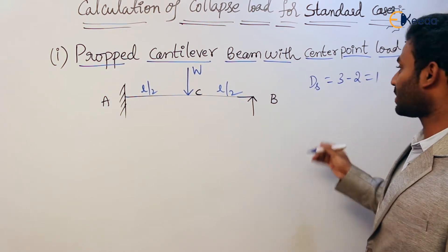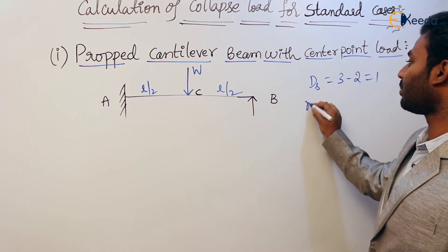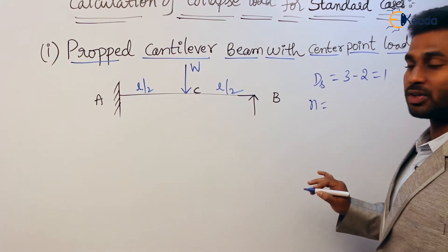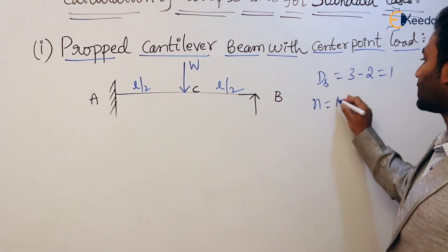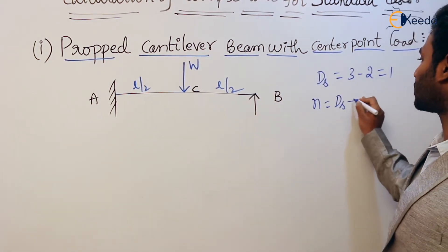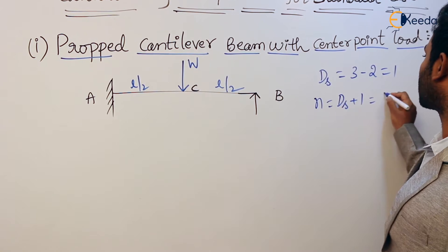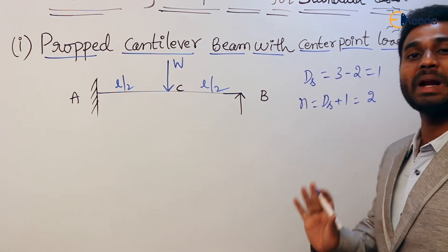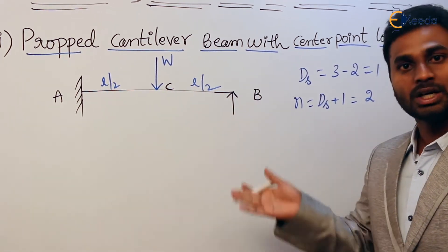The next step is the calculation of the number of plastic hinges required. The number of plastic hinges required is DS plus 1, which equals 2. So we require 2 plastic hinges.